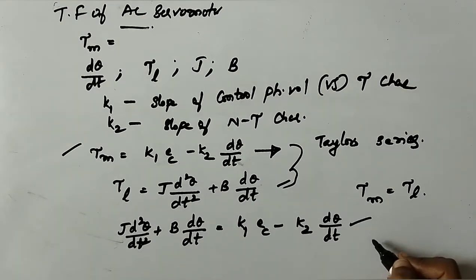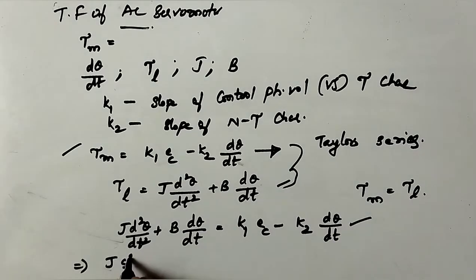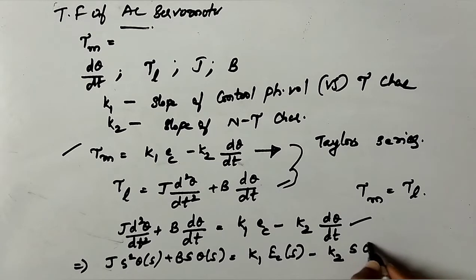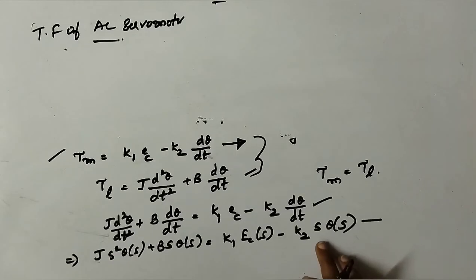J·s²·θ(s) + B·s·θ(s) = K1·Ec(s) - K2·s·θ(s). Now, from here taking θ(s) common,